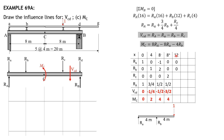When x equals 12, the load is at C, so only r sub small c is 1 and the rest are 0. R sub A: 0 plus three-fourths of 0 plus one-fourth equals one-fourth. Shear in CD: one-fourth minus 0 minus 0 minus 1 equals negative three-fourths. M sub C: 8 times one-fourth equals 2, minus 0, minus 0. So positive 2.